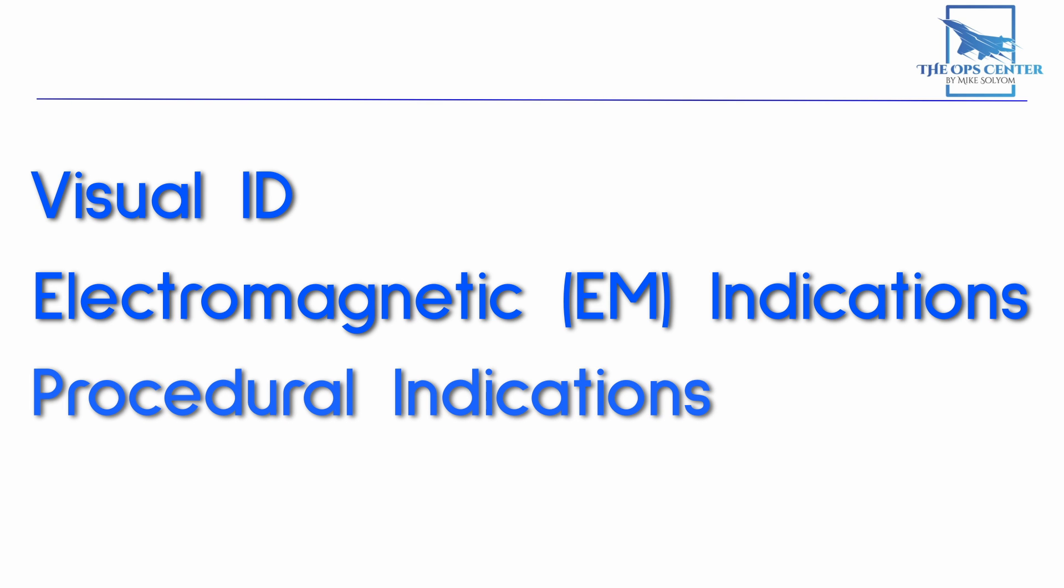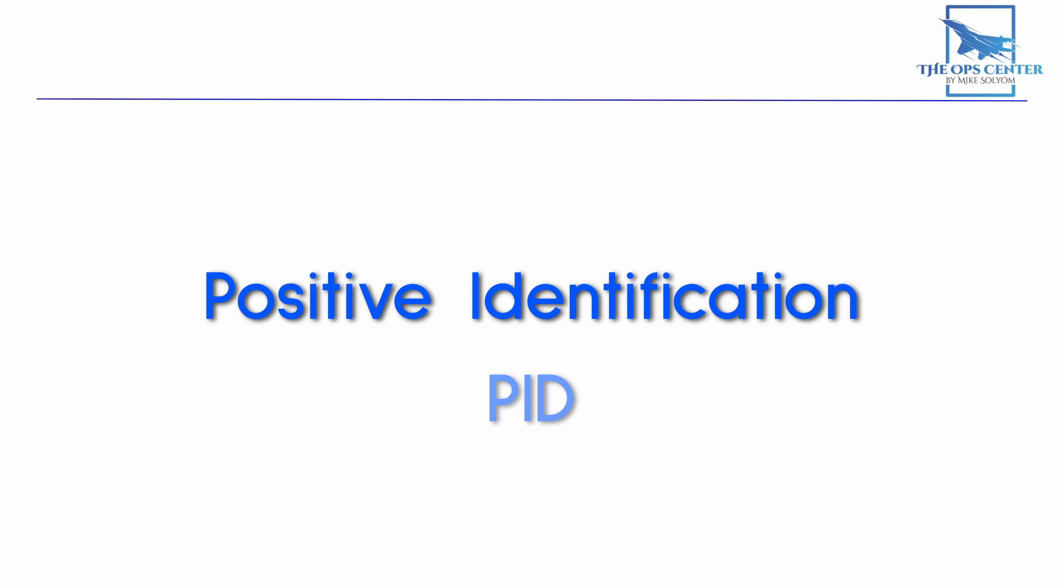The observations in this last category are known as procedural indications. Each of these has pros and cons. So it usually takes a combination to get a good idea of the affiliation of the target, which is known as a positive identification, or PID for short.